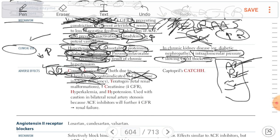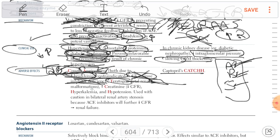Regarding adverse effects of ACE inhibitors — Captopril and the '-pril' drugs — they cause cough and angioedema due to accumulation of bradykinin, and are contraindicated in C1 esterase inhibitor deficiency. Importantly, ACE inhibitors are teratogenic — this is asked on the exam. ACE inhibitors cause fetal renal malformation; if the mother is using ACE inhibitor it leads to renal malformation in the fetus.